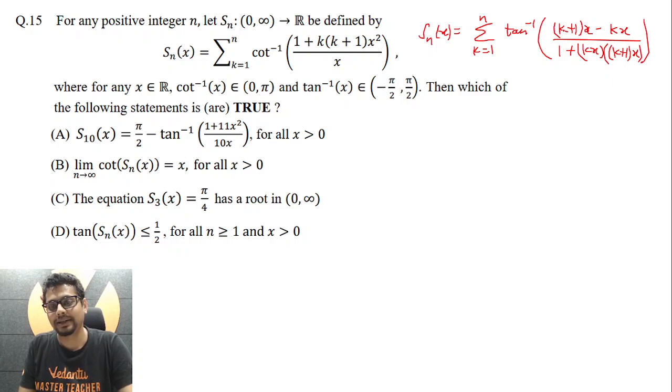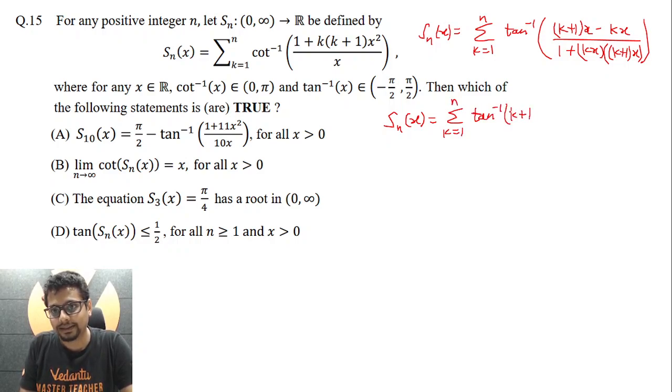So here (k+1)x is always positive because x is positive, k+1 is some natural number, kx is positive because x is positive and k is a natural number. So here you can write S_n(x) is equal to sigma k equal to 1 to n tan inverse (k+1)x minus tan inverse kx.